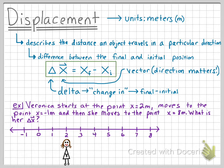Veronica starts at the point 2. She then begins to move to the left to point negative 1. She then moves to the right to point 8.